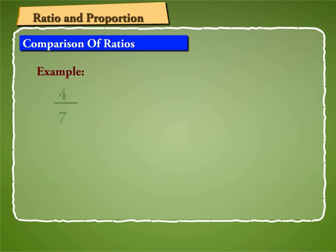For example, 4 by 7 is greater than 3 by 7, so 4 is to 7 is greater than 3 is to 7.